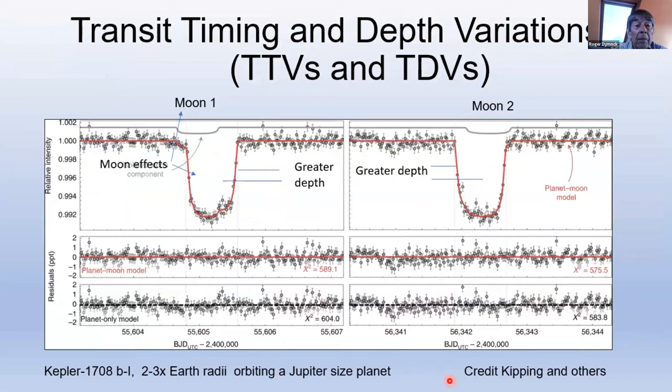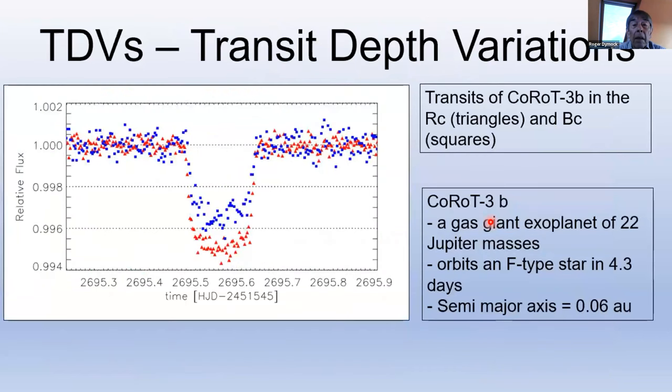This is an actual example. You get a short drop there, which is the moon. And you get a deeper drop there, which is the moon and the planet. In the right diagram, the moon is trailing the planet. So you just get a slight dip there and you get a slightly deeper transit there compared with where you've got the planet only. And that's the moon and the planet. So you can get variations in depth.